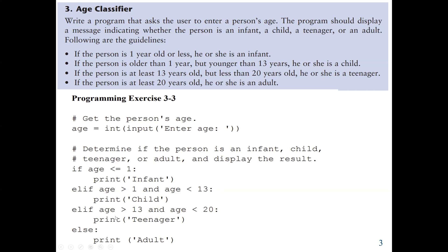Next, we say if the age is greater than 13 and age is less than 20, then we print teenager. Else, we print adult. Since we have four conditions covering ages from 0 to 19, we don't need to explicitly write that if the age is greater than or equal to 20 print adult — that would be the default. If any of the three conditions are false, the last one automatically should be true, unless a negative value is entered. That concludes our first question.